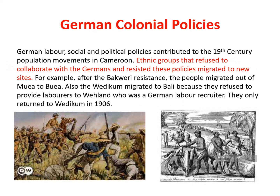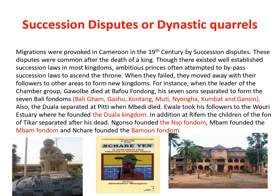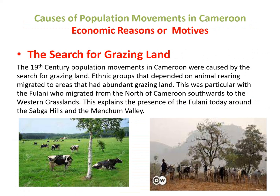The next political factor is inter-tribal war. During the 19th century, ethnic and tribal wars were very rampant. These wars were caused by the determination of stronger groups to subjugate and enslave weaker ones, and were either intra-tribal or inter-tribal. Such wars created fear and insecurity, forcing tribal communities to migrate to war-free areas. For example, between 1885 and 1888 the Bali defeated the Bamoun, forcing them to move to their present area. Also, the Duala attacked the Bakoko, forcing them out of the coast.